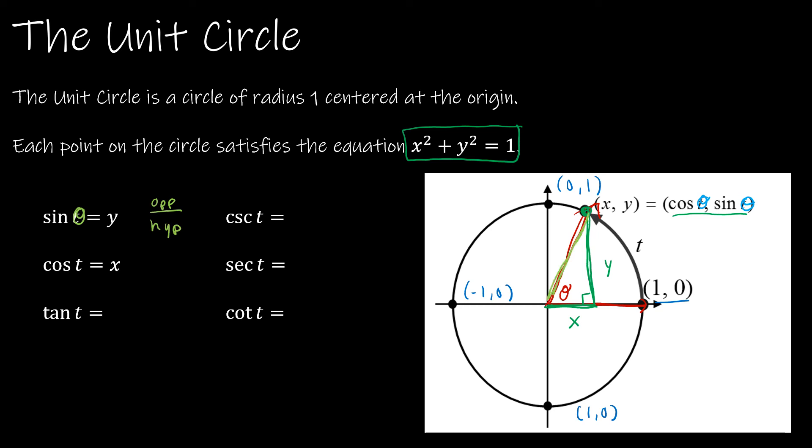Sine can be found by taking the side opposite the angle divided by the hypotenuse. So in this triangle that I've just created, the side opposite theta is y, and the hypotenuse is 1, because the radius of my circle is 1. So this is just y over 1, and that's why sine is going to be equal to the y coordinate.